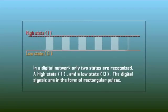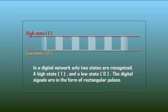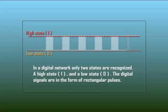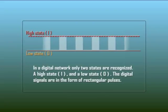All the bandwidths mentioned up to now refer only to analog signals. Modern technology involves passage of information from one place to another through a digital network rather than an analog network. In a digital network, only two states are recognized: a high state and a low state. The digital signals are in the form of rectangular pulses.